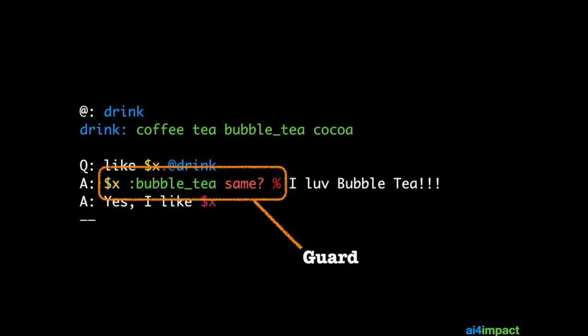Otherwise, it's a more generic response Yes, I like coffee or Yes, I like cocoa where X is always a drink because it's already been matched in the rule.